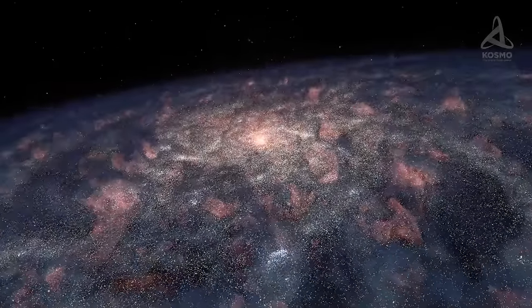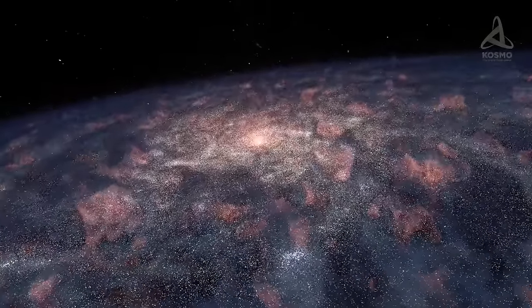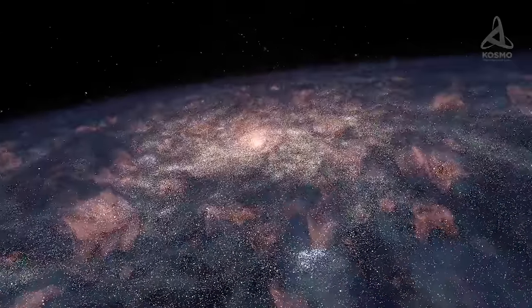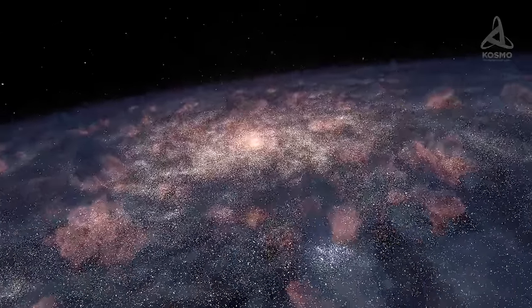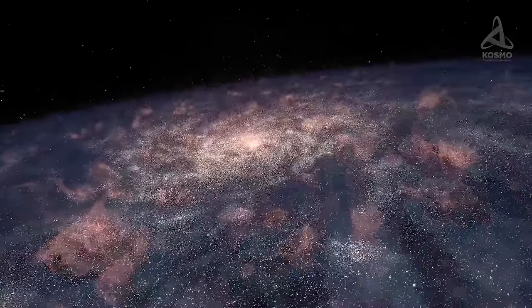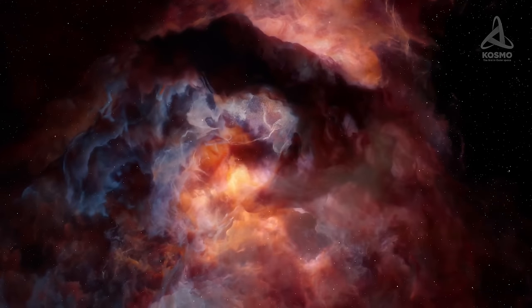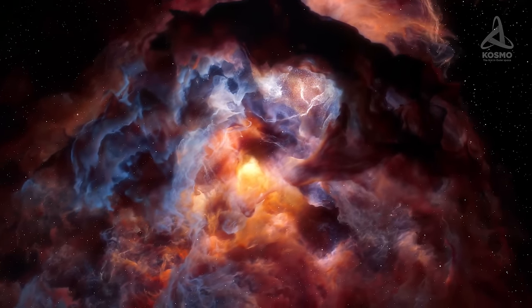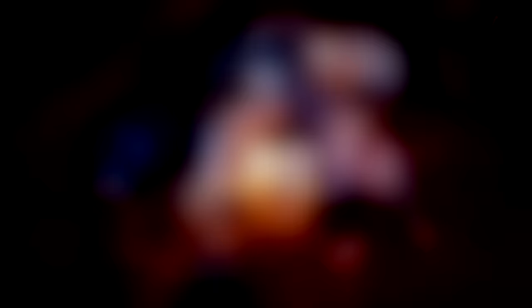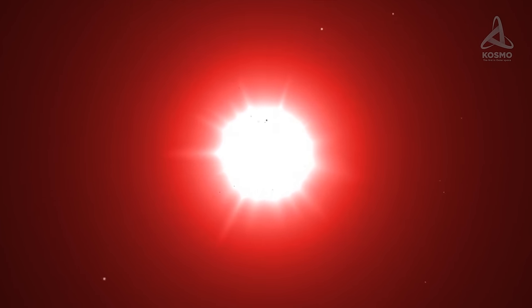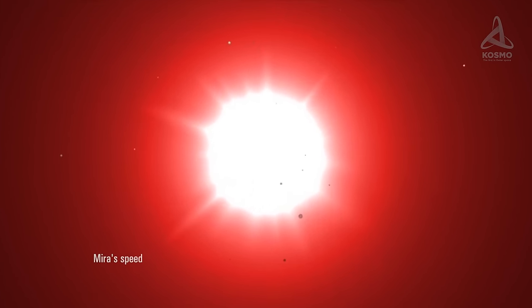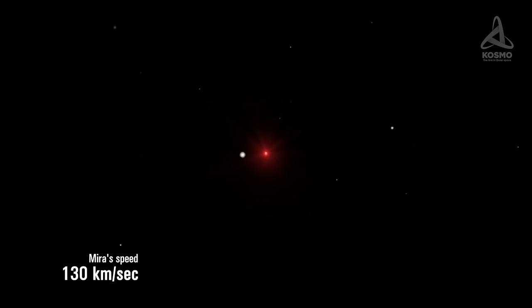Most stars in the Milky Way slowly revolve around the center of the galaxy. Their appearance is rather recognizable, and their speed is approximately the same as that of interstellar gas. Our Sun, for example, passes through the local interstellar cloud at a speed of about 25 km per second. But Myra really stands out in this respect, as it whizzes through gas in interstellar space at a speed of 130 km per second.